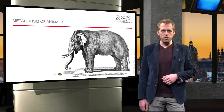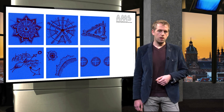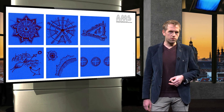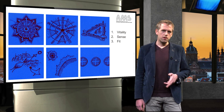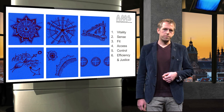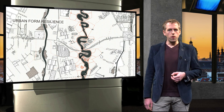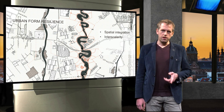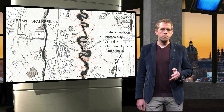Let me now elaborate on how the desired performance of the city can be related to city form. Kevin Lynch translated what he calls good city form into six dimensions: vitality, sense, fit, access, control, and efficiency and justice. The five indicators distinguished by Claudio Cugaci focusing on urban form resilience are spatial integration, interscalarity, centrality, interconnectedness and extra capacity.